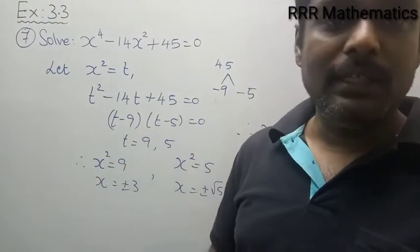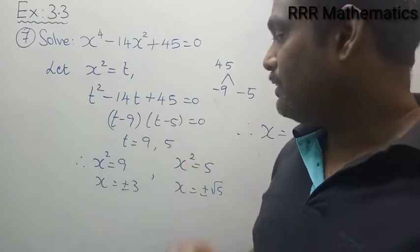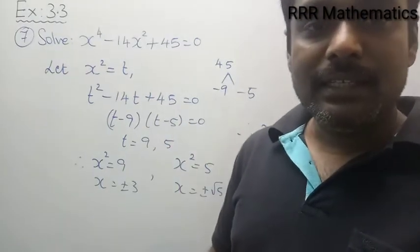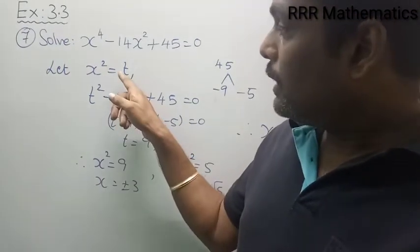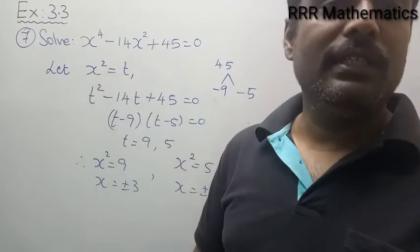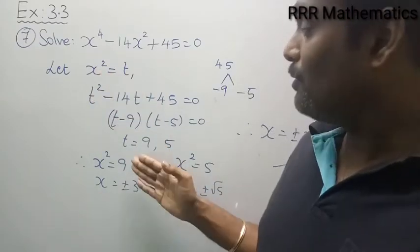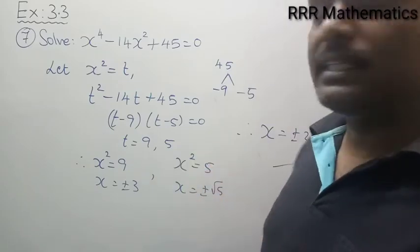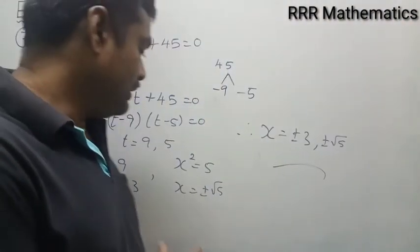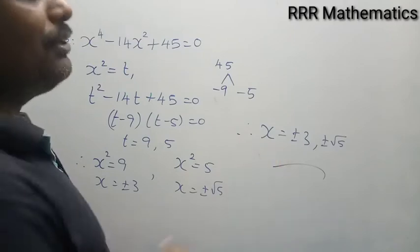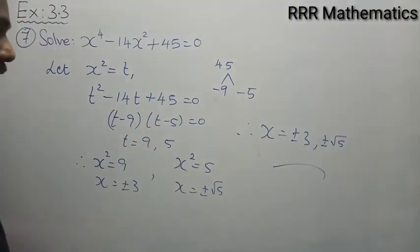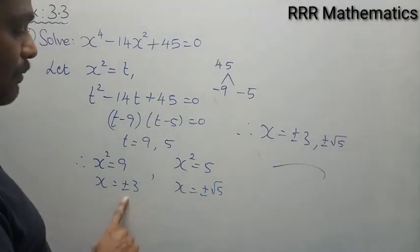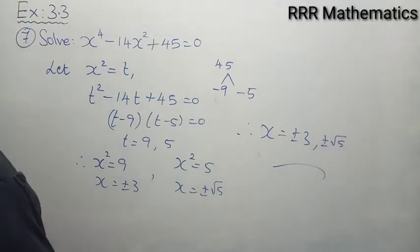In this case very simple, I am getting (t - 9)(t - 5), so the value of t will be 9 and 5. Actually t is an assumption. I already assumed t = x², so x² = 9 gives x = ±3, and x² = 5 gives x = ±√5. Therefore the value of x is ±3 and ±√5.